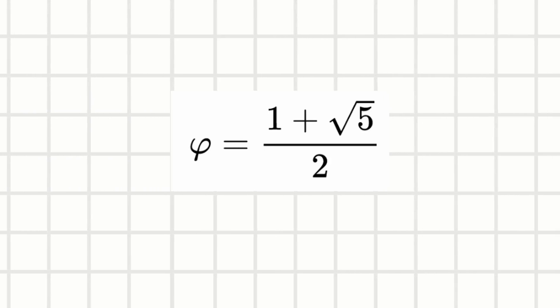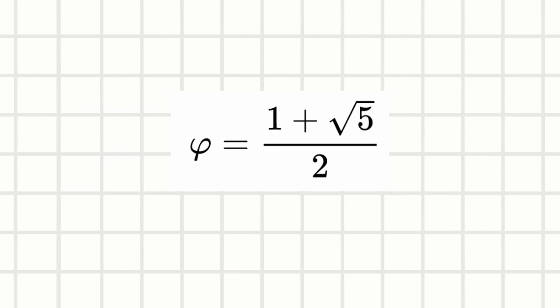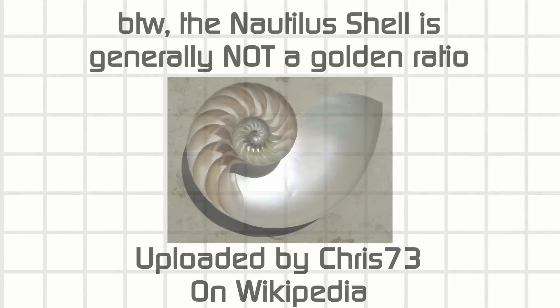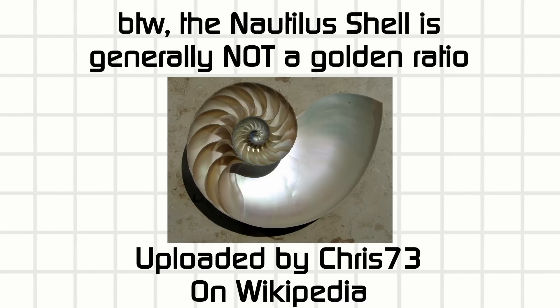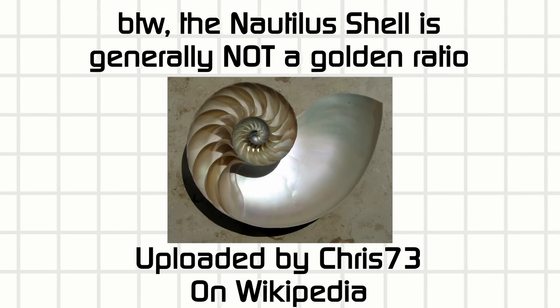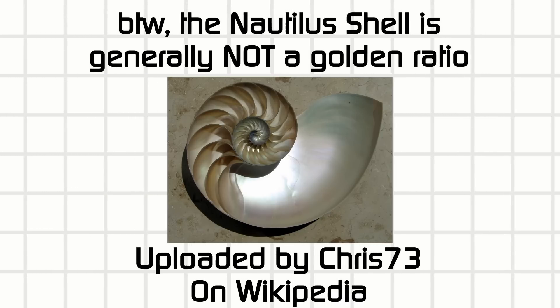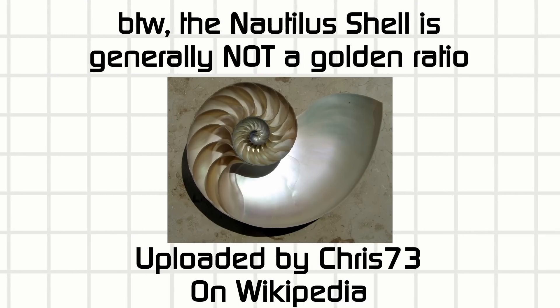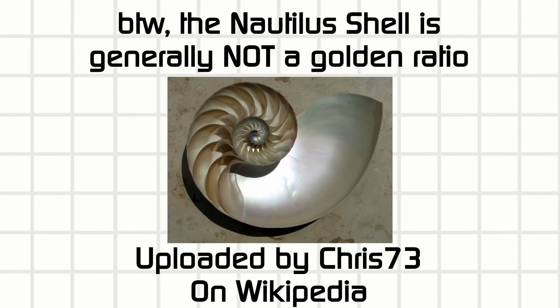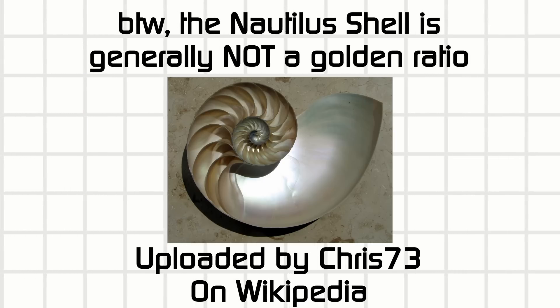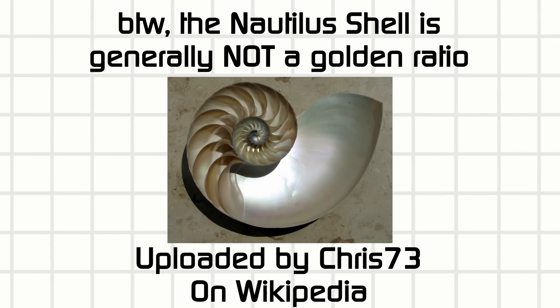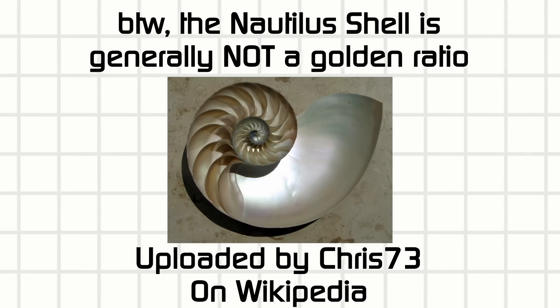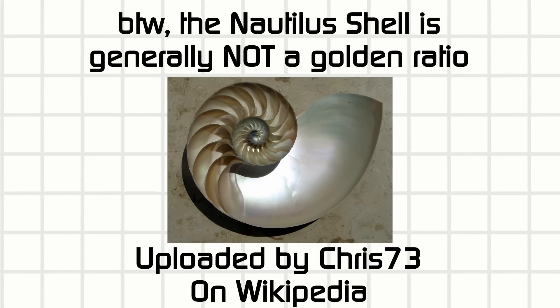By the way, the nautilus shell isn't exactly a golden ratio. It actually follows another pattern called a logarithmic spiral, which doesn't have to have the golden ratio. But flower petals actually follow the golden ratio, and it's because of efficiency.